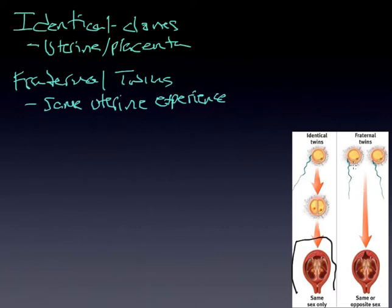On the other hand, in fraternal twins, it is two separate fertilizations that actually occur. They inhabit the same uterine, but what you see in this diagram here is you have two very different placentas that feed each fetus.